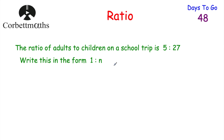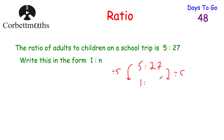Sometimes we're asked to write ratios in the form 1 to N or N to 1. For example, the ratio of adults to children on a school trip is 5 to 27, and we want to write this in the form 1 to N. To get from 5 to 1, we divide by 5, so we also divide 27 by 5. 27 divided by 5 is equal to 5.4. So the ratio is 1 to 5.4, meaning for every one adult there are 5.4 children.